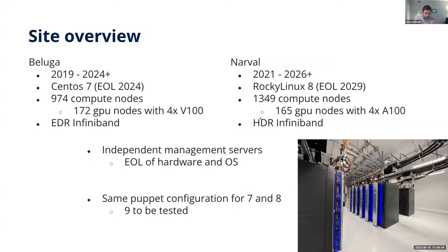Locally we have two main clusters in the same center in Montreal, called Beluga and Narval, which were deployed in 2019 and 2020 during the pandemic. For both of these clusters, we're now using XCAT and Puppet. We've been using XCAT and Puppet independently for at least five to seven years inside Calcul Québec, starting with a small GPU cluster called Ilios. Now we've pushed this system onto a medium-sized cluster with about 2,000 nodes in total.